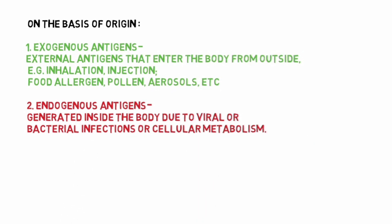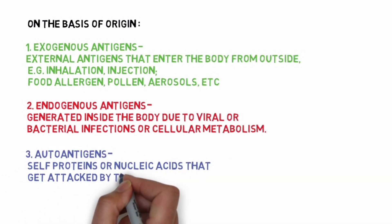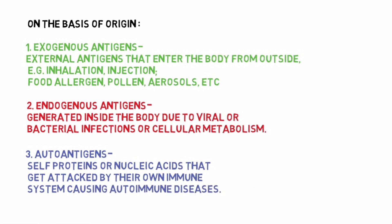Exo means external and endo means internal. Number three: Auto antigens. These are antigens that get attacked by their own immune system, causing autoimmune diseases.